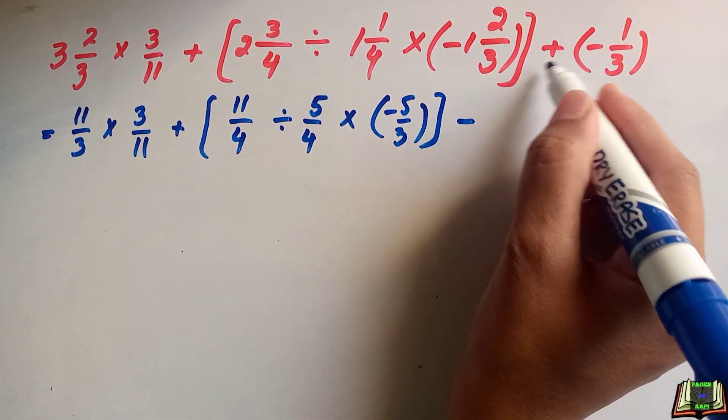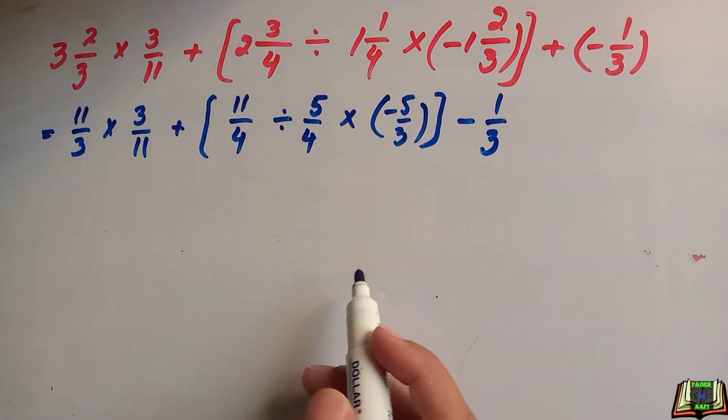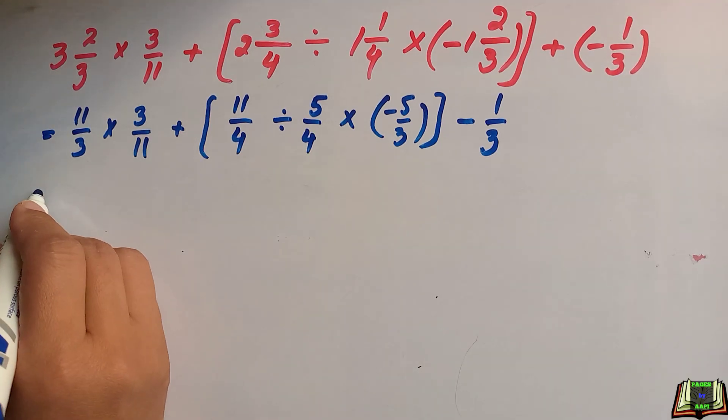Plus minus, minus times minus is plus, minus 1 over 3. I hope you are familiar with the BODMAS rule. We are going to use that in the next steps where brackets are solved first, so we will also solve this square bracket.